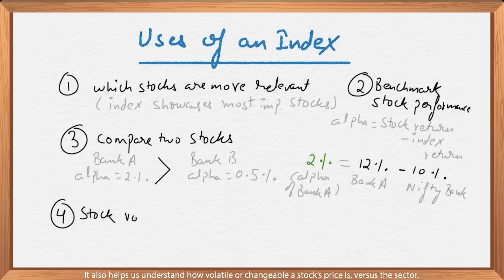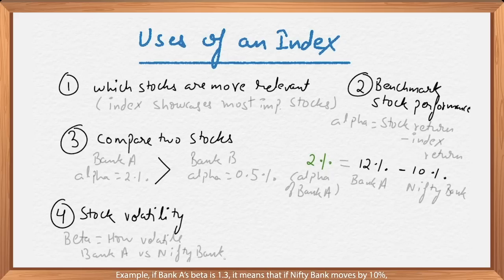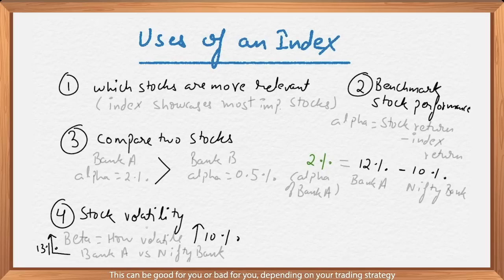It also helps us to understand how volatile or changeable a stock's price is versus the sector. Example, if Bank A's Beta is 1.3, it means that if Nifty Bank moves by 10%, on an average, Bank A will move by 13%. This can be good for you or bad for you, depending on your trading strategy.